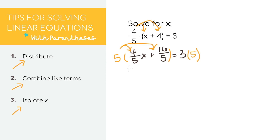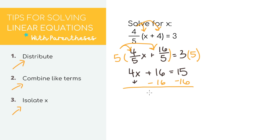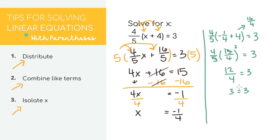Distributing the 5, we get 4x equals 16. On the right side, 3 times 5 equals 15. To get rid of the positive 16, subtract 16, giving us 4x equals negative 1. Then divide by 4 on both sides, so x equals negative one fourth. Plugging in to check, we get 3 equals 3, which is true — so we know we have the right answer.